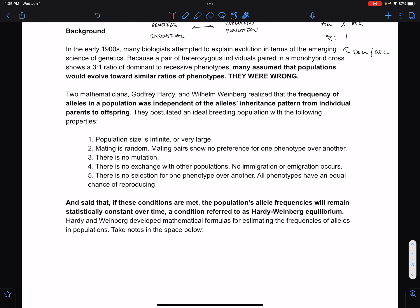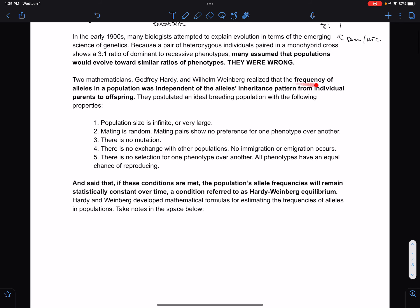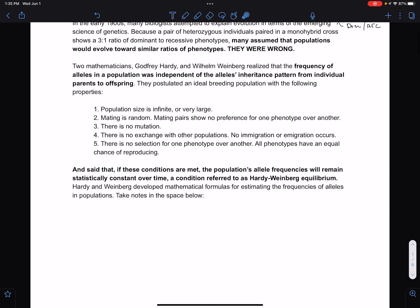There were two mathematicians, Godfrey Hardy and Wilhelm Weinberg, that realized that the frequency of alleles in the population was independent of the alleles' inheritance pattern from individual parents to offspring.